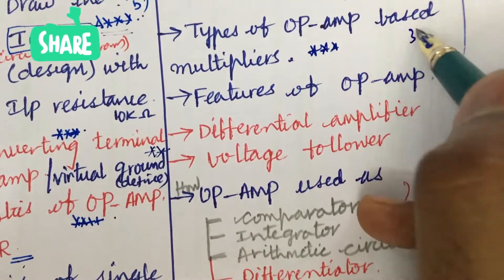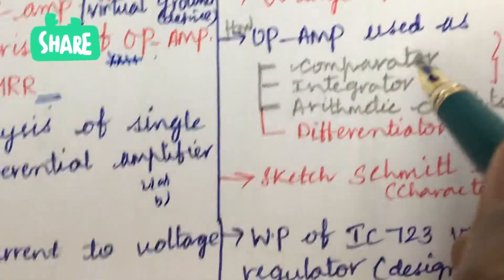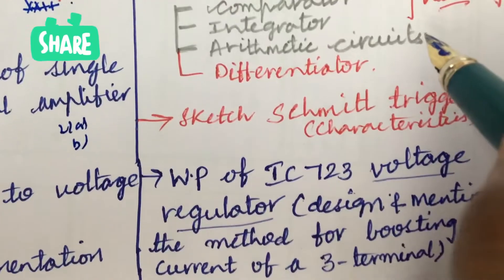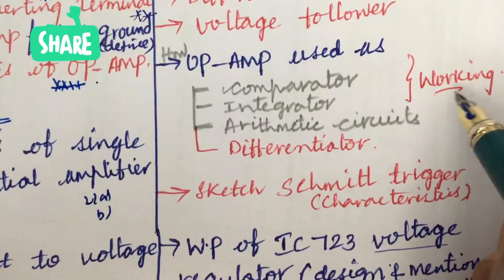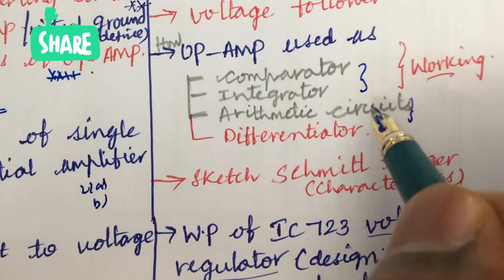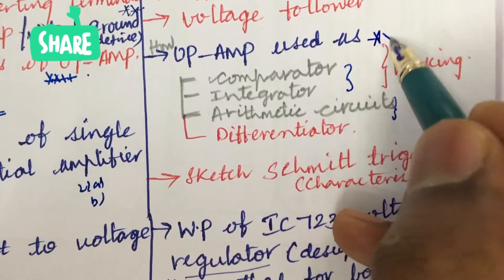From this part we can expect 3A as well as 3B. Later, how OP AMP is used as comparator, integrator, arithmetic circuits, and differentiator and the working of this. From this they will be asking the differences or any two working explanations and from this part you will be getting one or two questions for sure.